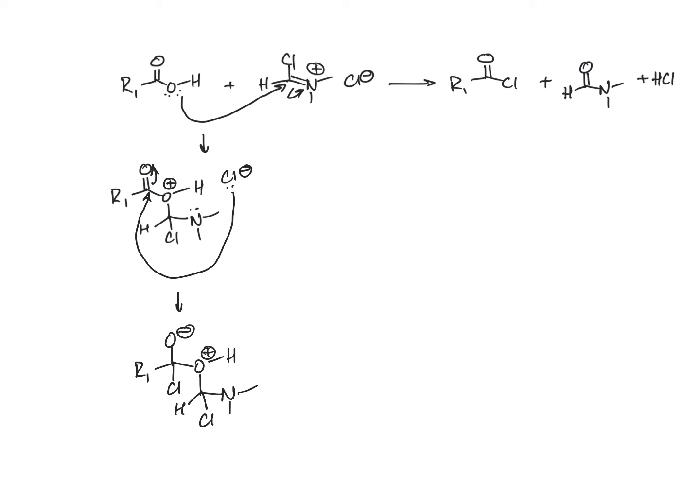At this point, what we're going to do now is an elimination. So again, this is your standard beta elimination that we're used to. This will collapse. We'll then break that bond. So that's going to form the acid chloride.